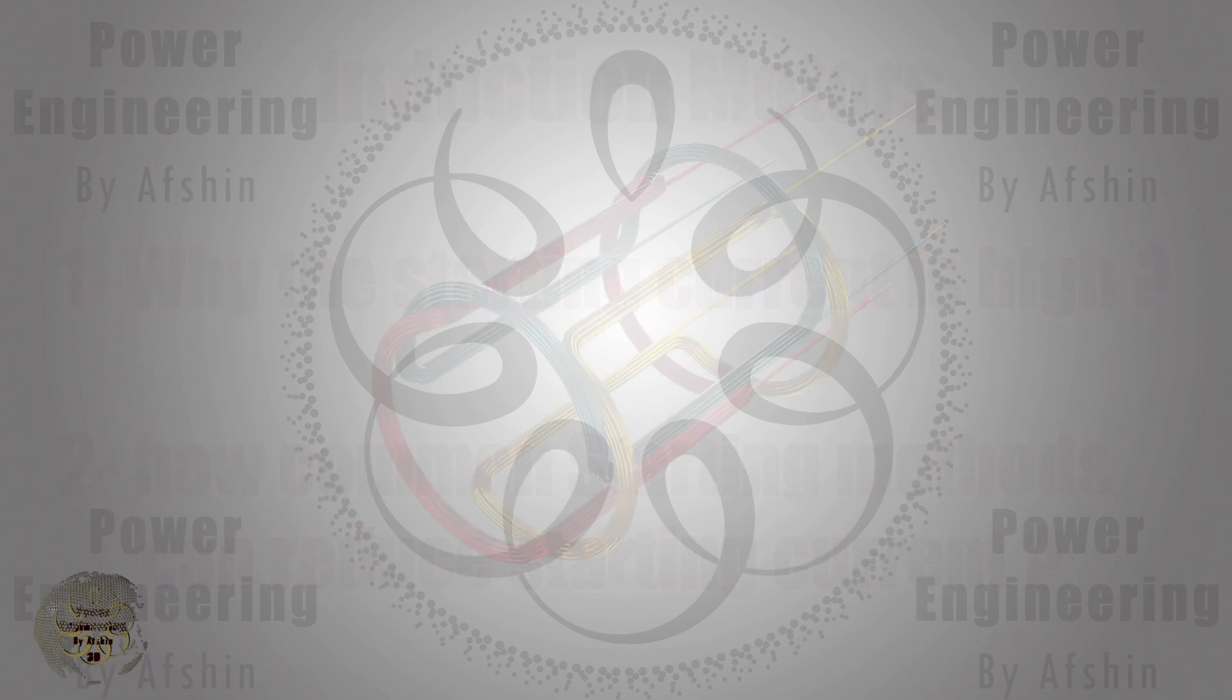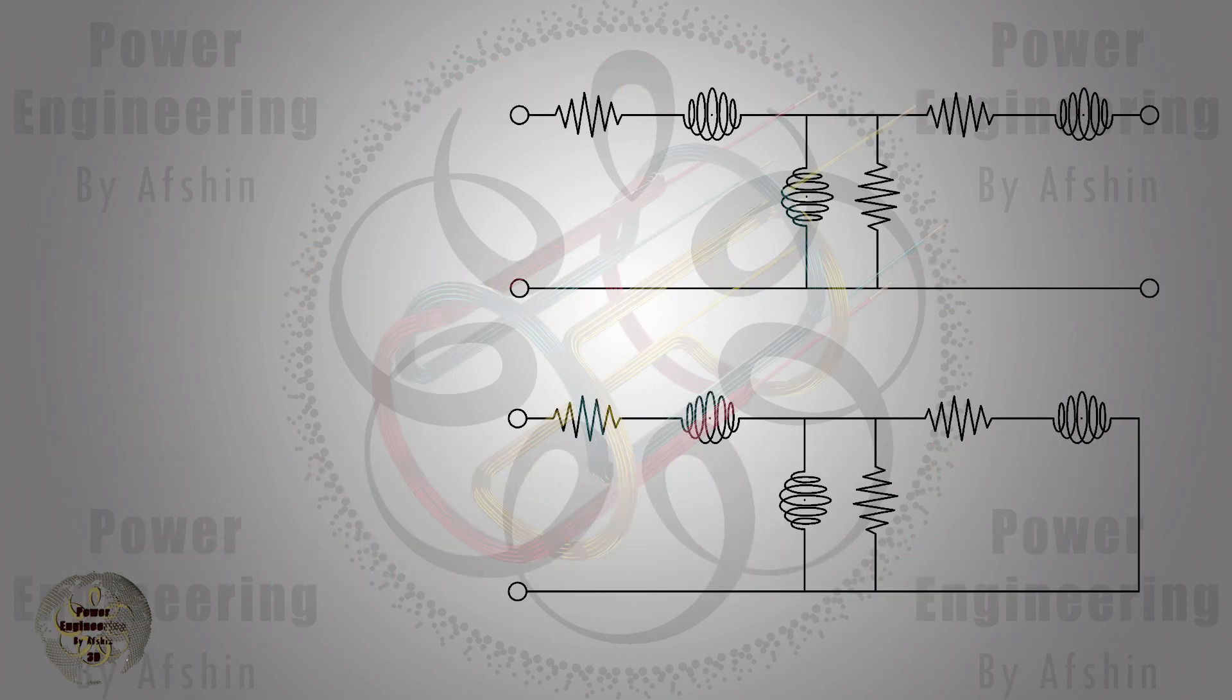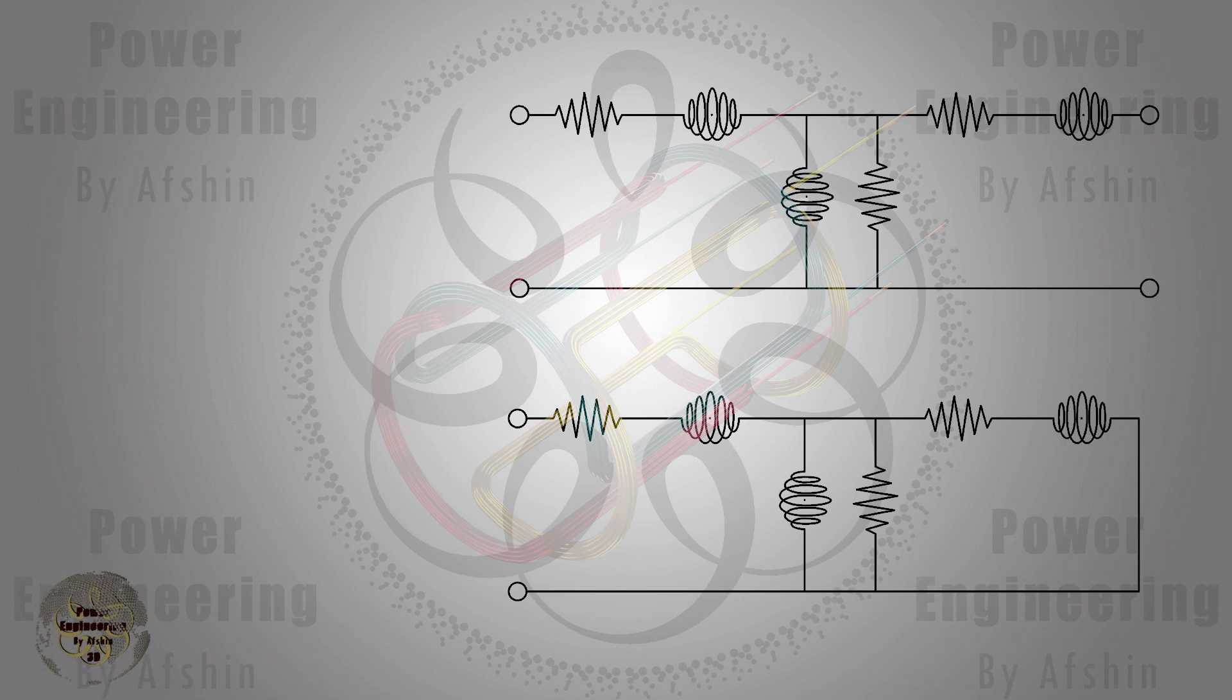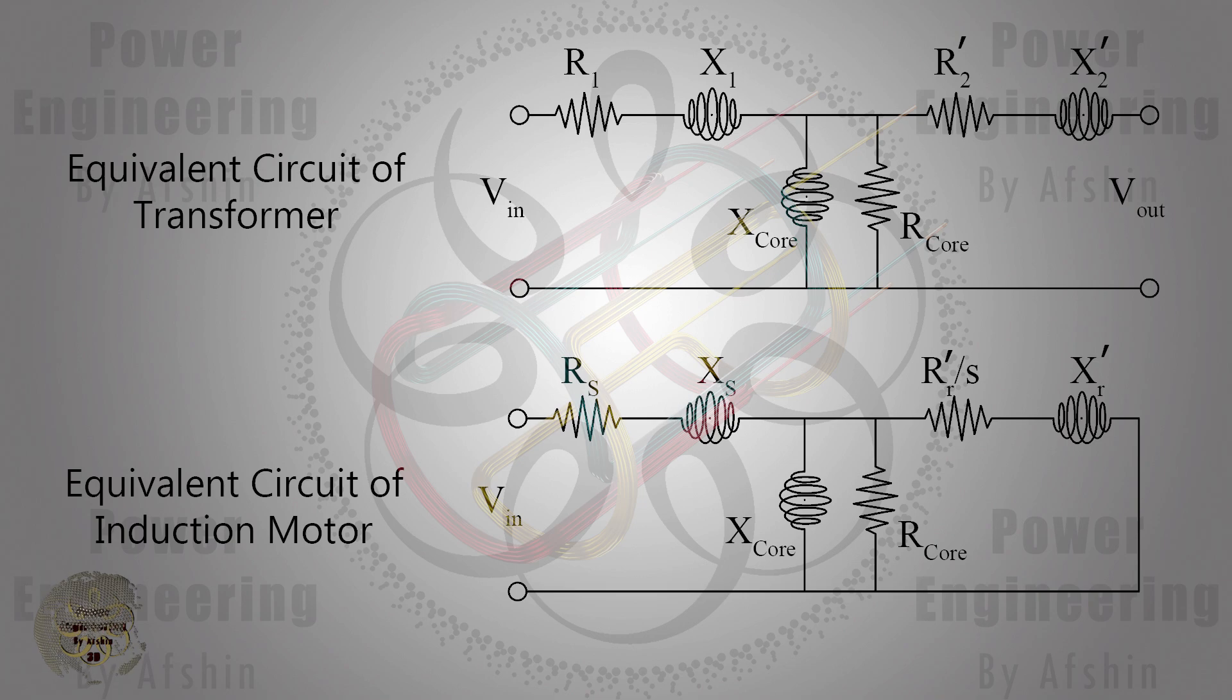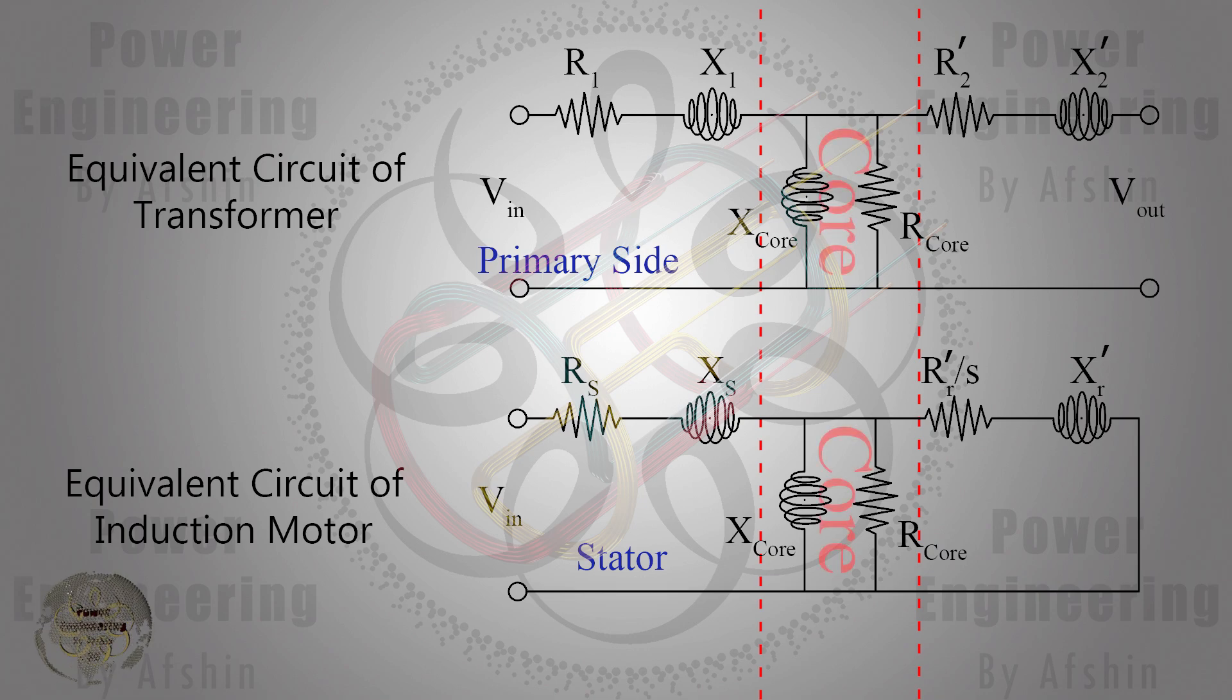First, let's explain that the structure of an induction motor resembles that of a transformer. To understand why an induction motor behaves like a transformer, consider that the stator winding is magnetically coupled with the rotor. When the motor operates, the stator induces an electromagnetic field in the rotor. The stator functions like the primary winding and the rotor acts as the secondary.